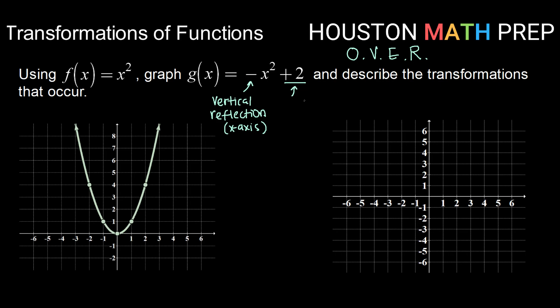Now a plus 2 on the outside, I know that plus transformations cause shifts. Since this is on the outside, that is going to be a vertical shift. Vertical means up-down and this does exactly what it looks like. So I know that's going to be up 2. So I'm going to have a vertical reflection over the x-axis and a vertical shift up 2.